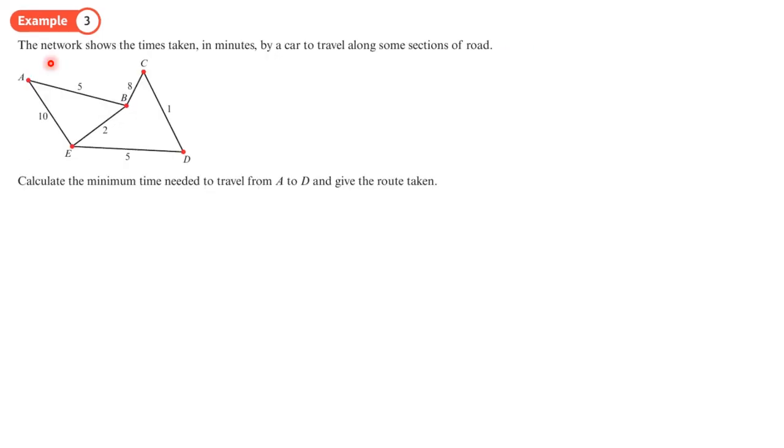So this network, or weighted graph, shows the times taken in minutes by a car to travel along some sections of road. Calculate the minimum time needed to travel from A to D and give the route taken. Now, we're just going to do this by inspection, so we're going to look at all the routes I can take from A to D, and then look at the shortest one, the one that gives me the lowest answer. Now, don't assume, because it looks short on a diagram, it's the shortest route.